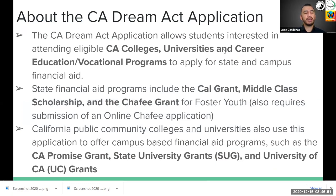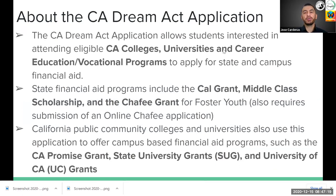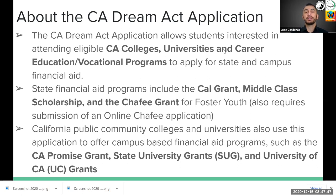The California Dream Act application allows students interested in attending an eligible California college, university, career education, or vocational program to apply for state and campus financial aid. State financial aid programs include the Cal Grant, the Middle Class Scholarship, and the Chafee Grant for foster youth, which also requires an additional online Chafee application submission. This application can also be used at California Public Community Colleges and Universities, offering campus-based aid such as the California Promise Grant, the State University Grant at CSUs, and University of California grants.